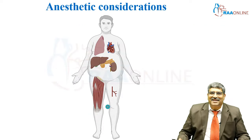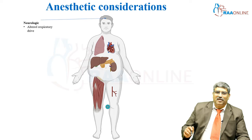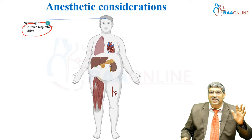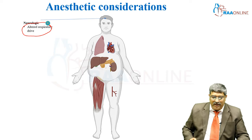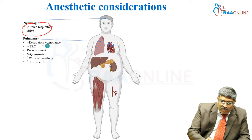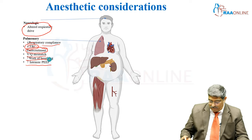What are the considerations in a patient with obesity? From the brain side, there is altered respiratory drive and decreased drive for ventilation. With regard to the pulmonary system, respiratory compliance is reduced, FRC is reduced, there is loss of recruitment maneuver, V/Q mismatch can happen, increased work of breathing, and increased intrinsic PEEP.